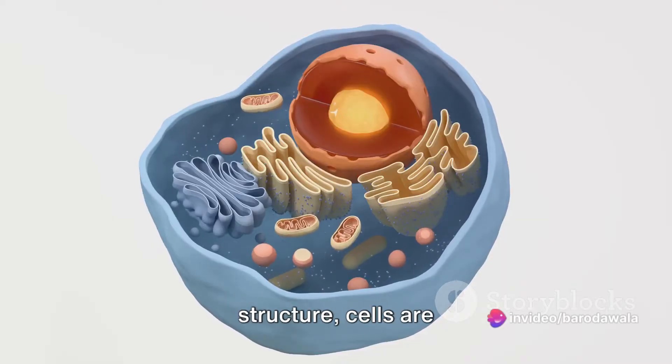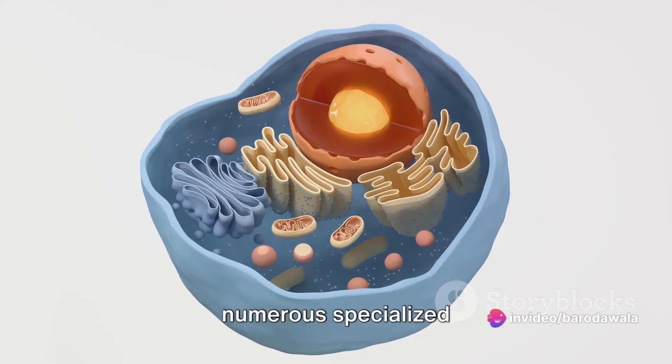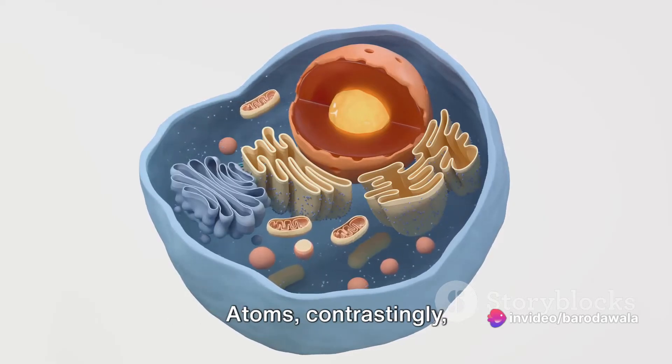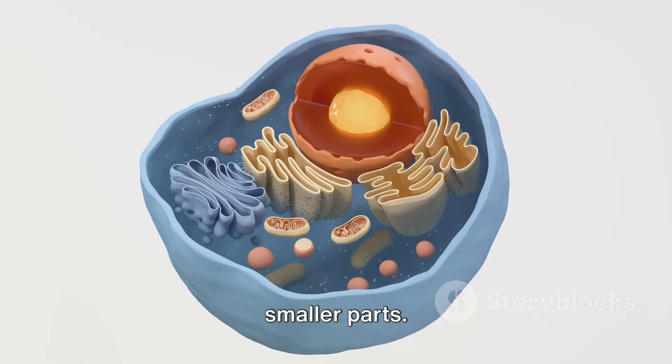When we look at structure, cells are complex, composed of numerous specialized structures known as organelles. Atoms, contrastingly, aren't made up of smaller parts.